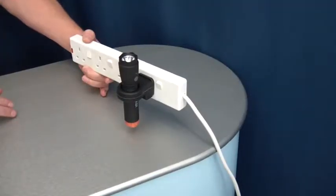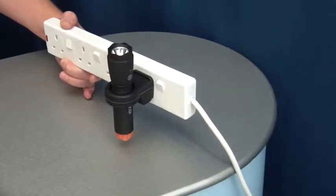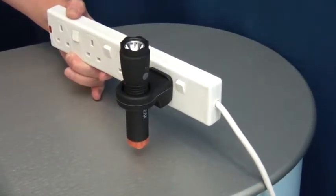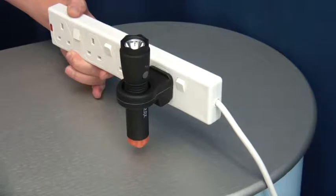In the event of a power cut, the torch automatically turns on, allowing you to safely find the torch in the dark.